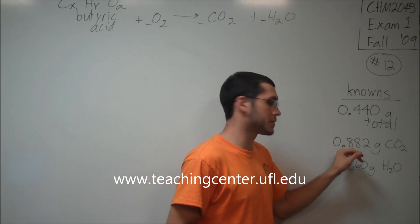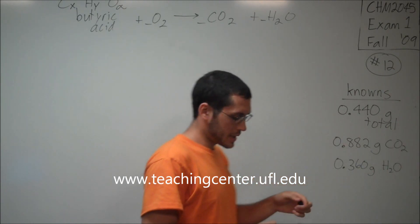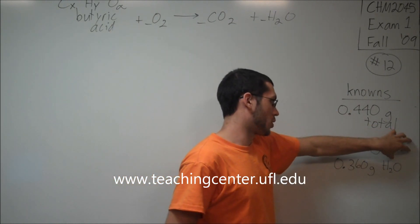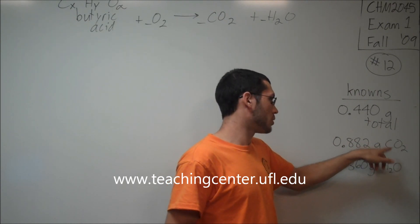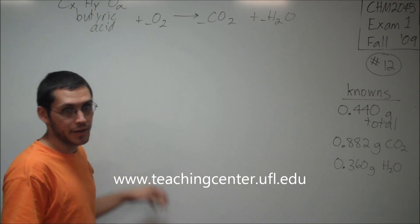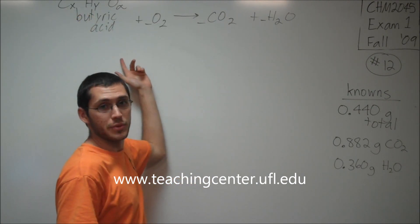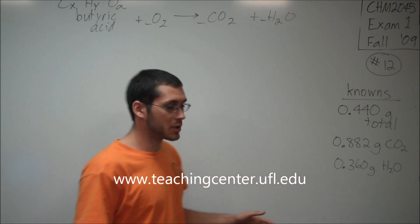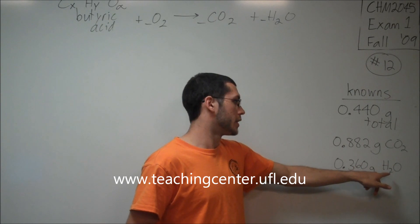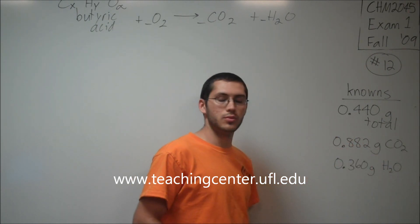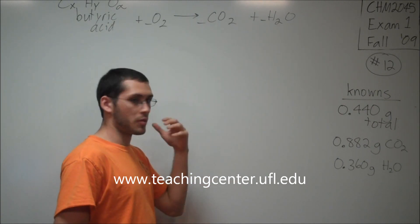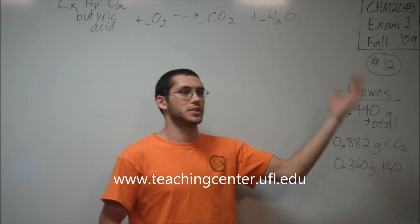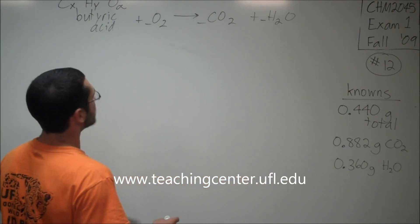We have to use the product, how much of the product we got, in order to think backwards. Here's the idea. When we blew up butyric acid, we got some carbon dioxide. Carbon dioxide contains all of the carbon that the butyric acid originally had, because none of the carbon went into anything else. All the carbon went straight to CO2. Similarly, all the hydrogen in butyric acid went straight into forming the water. So let's go to it.